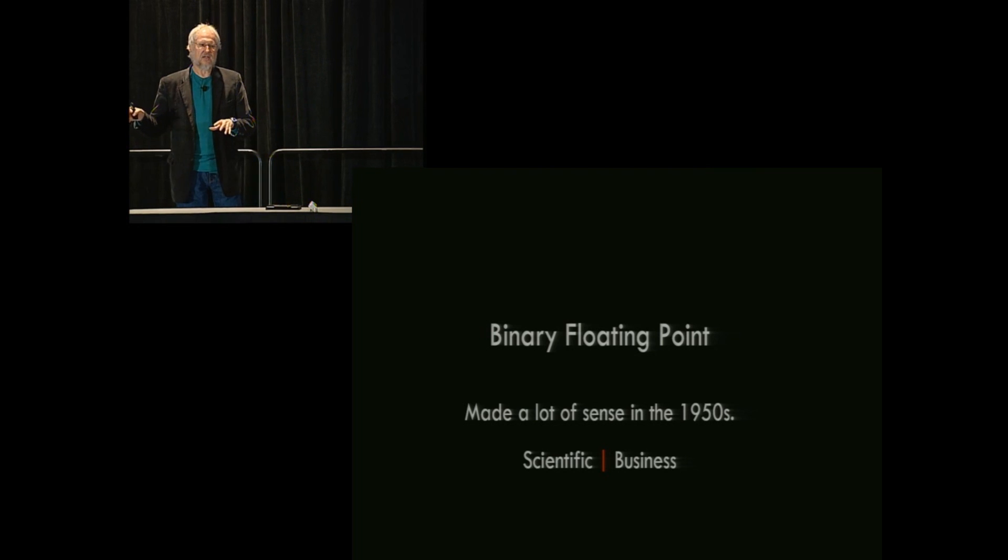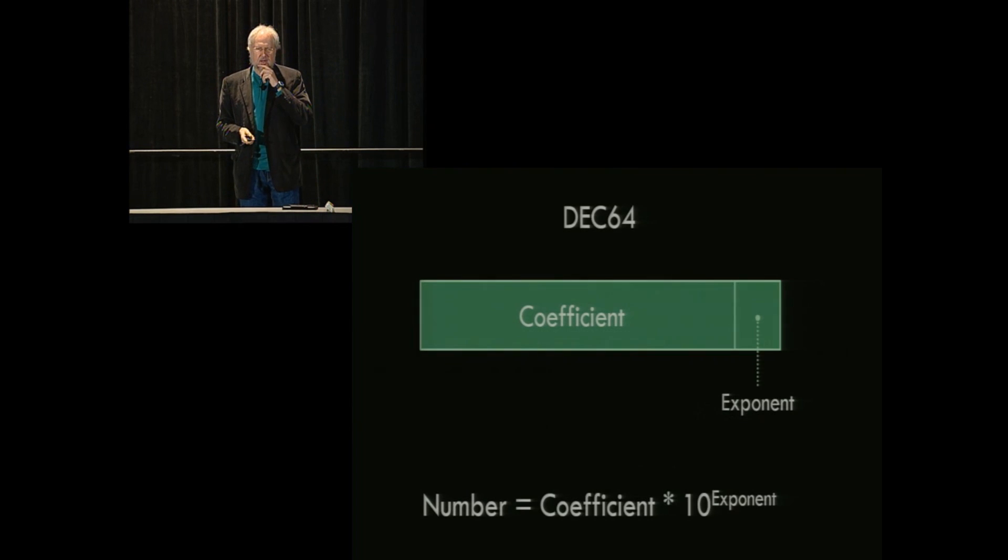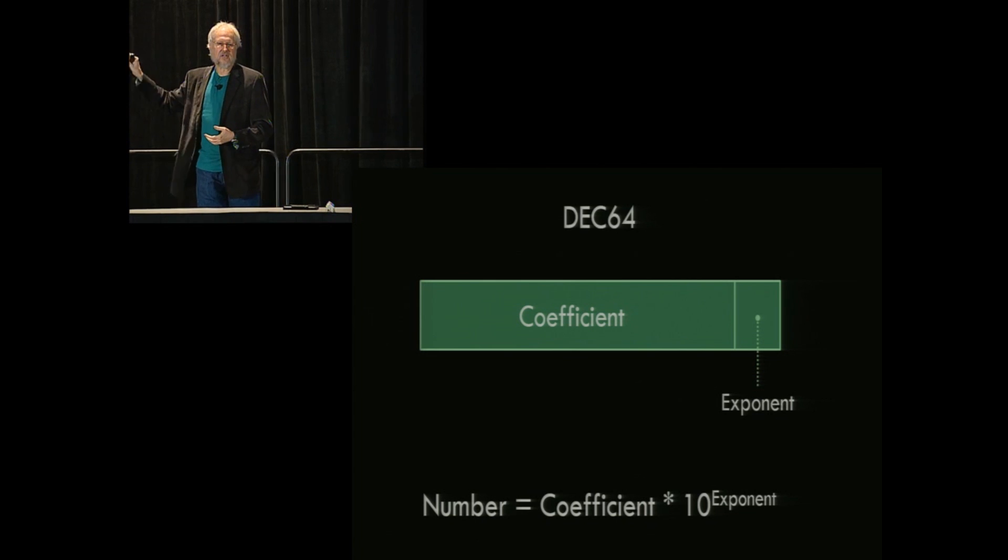But it was a ridiculous format. It was incredibly complicated, very, very slow to implement. Software implementation was hundreds of times slower than hardware for floating point. So the committee unfortunately rejected it. So this is what IBM should have proposed. So I call this DEC64. It fits in a 64-bit word. It contains two pieces of information. A coefficient and an 8-bit exponent. The thing that's most different about this from binary floating point is we've got a factor of 10 there, not a factor of 2. And because we have that factor of 10, it does the right thing. That it matches all of our intuitions that we learned in elementary school and middle school about how numbers work. These numbers work the same way.